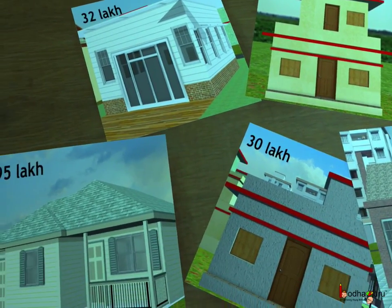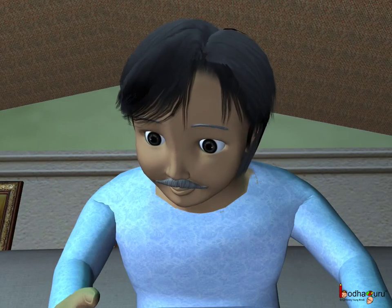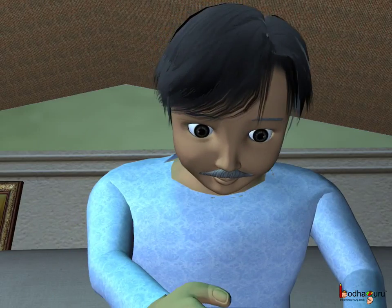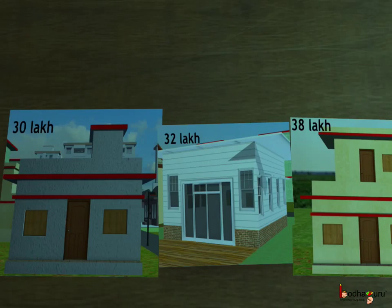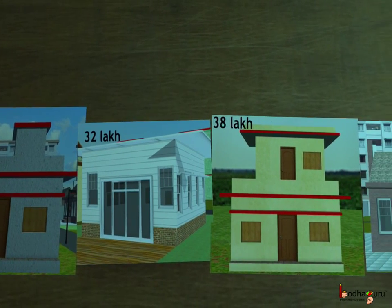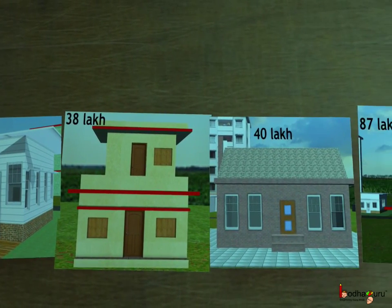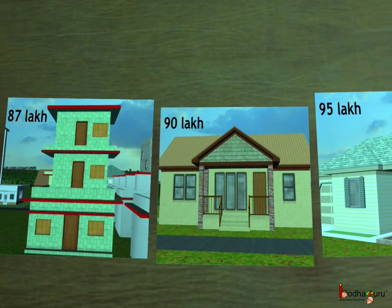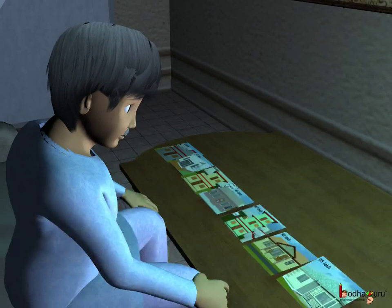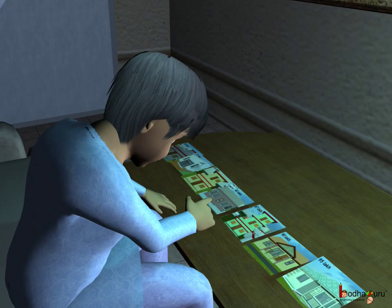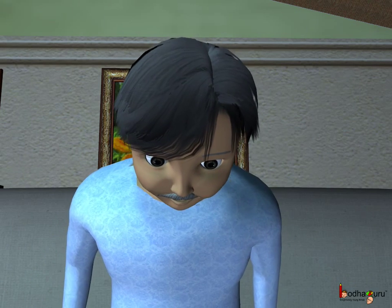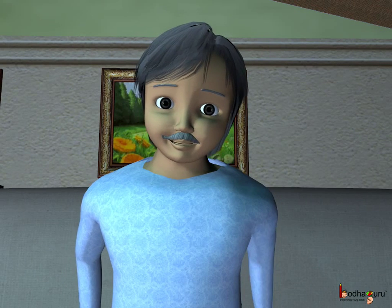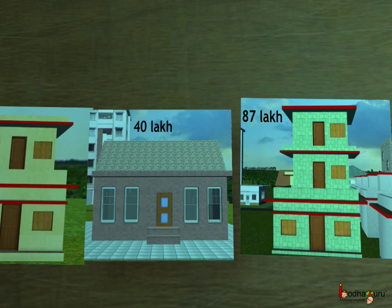So which houses could he buy? He arranged the houses in ascending order of price: 30 lakh, 32 lakh, 38 lakh, 40 lakh. After 40 lakh, the next house was 87 lakh, which he couldn't afford. So all the houses whose price lies below 45 lakhs are within his range, and while buying the house, he has to choose amongst these houses only.